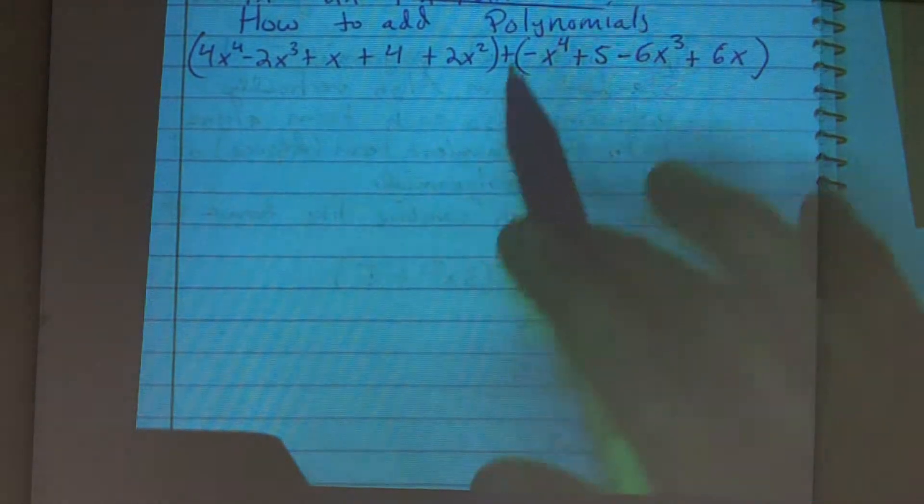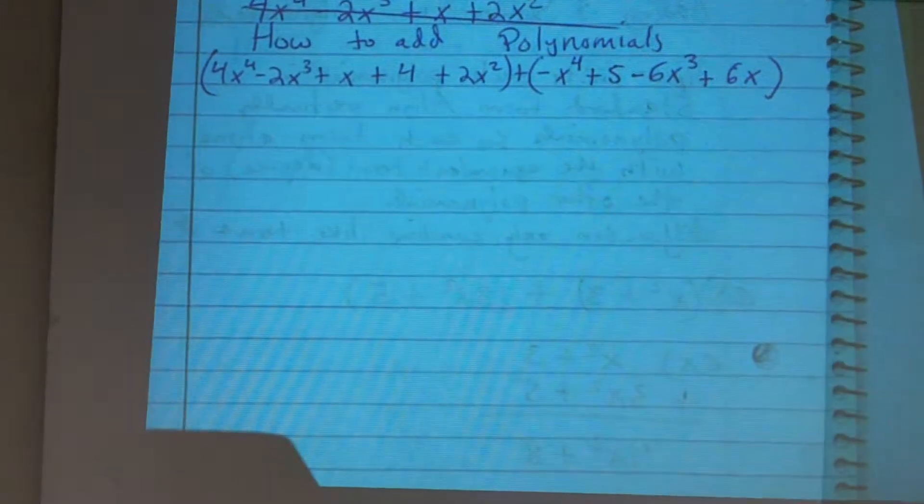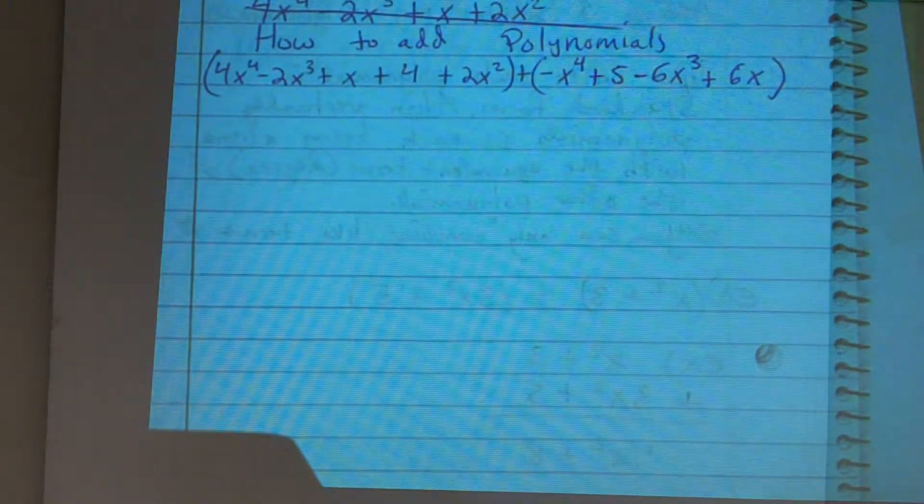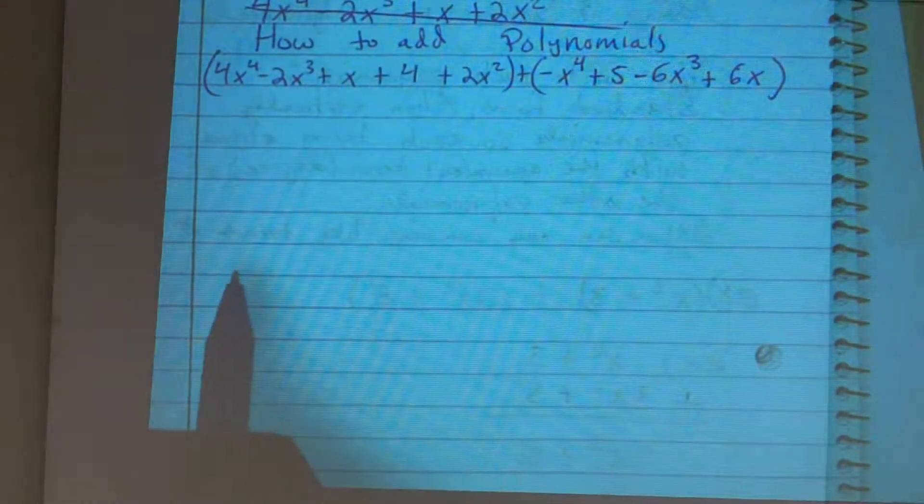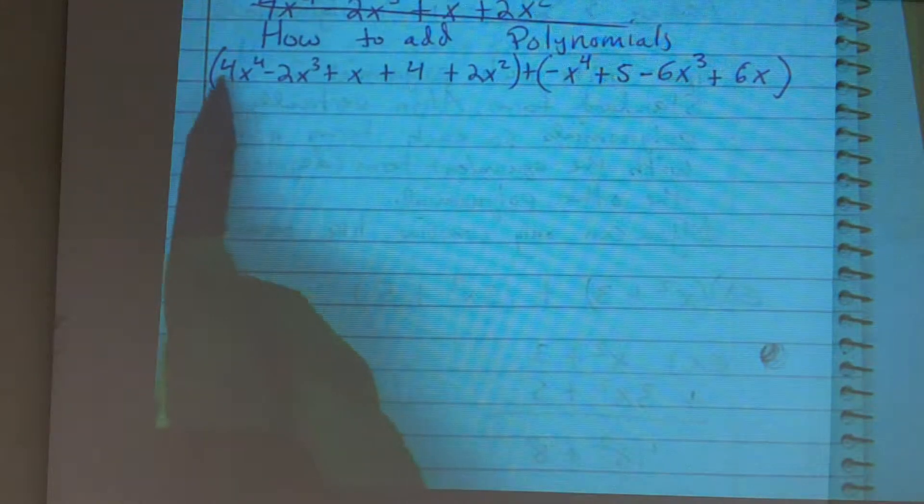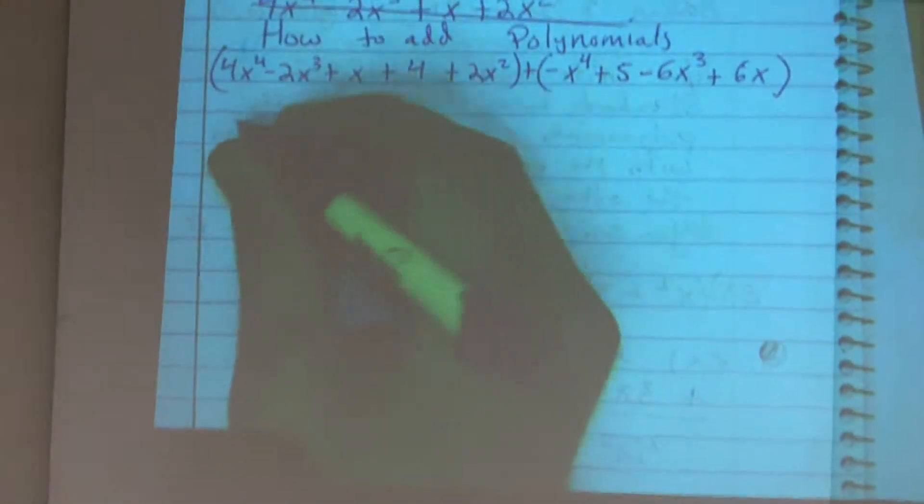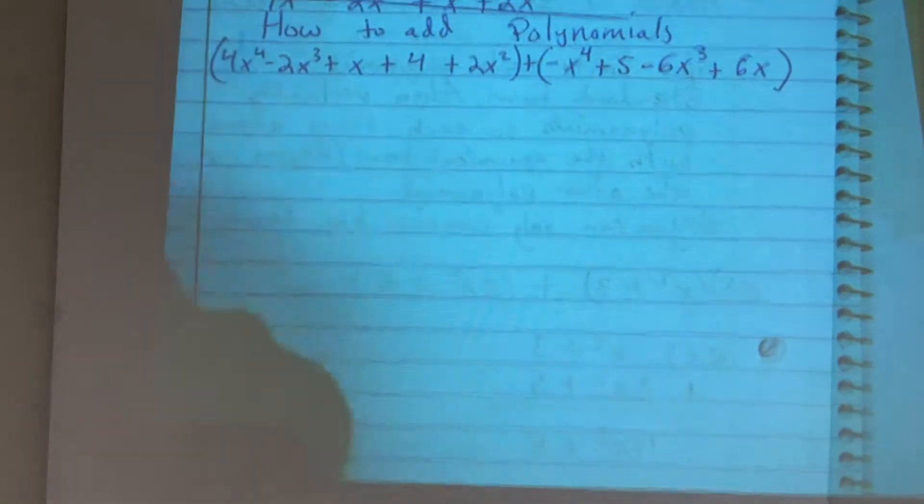What we're going to do is show you how to add polynomials. When adding polynomials, the first thing we want to do is make sure both of them are in standard form. We're also going to align them vertically. So I'm going to write these down in standard form. Remember, in standard form, you need to write the exponents in descending order.